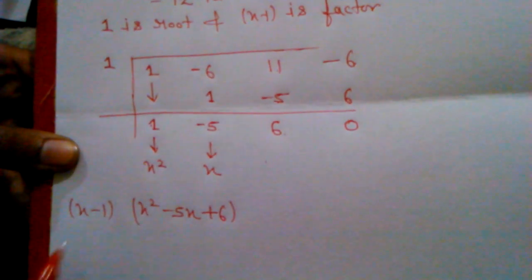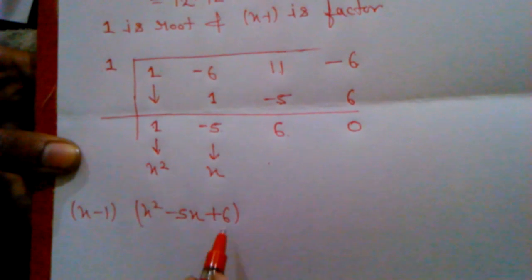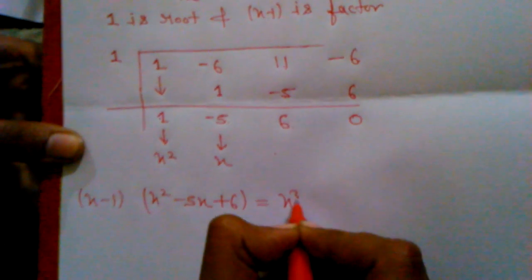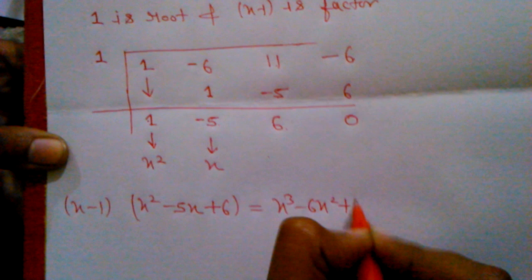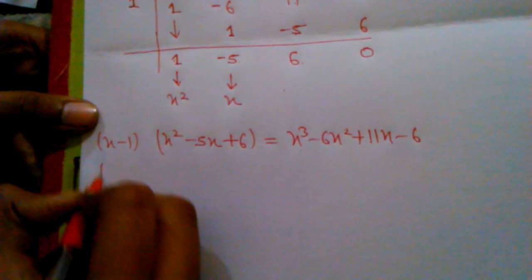Then, we write (x - 1)(x² - 5x + 6) = x³ - 6x² + 11x - 6.